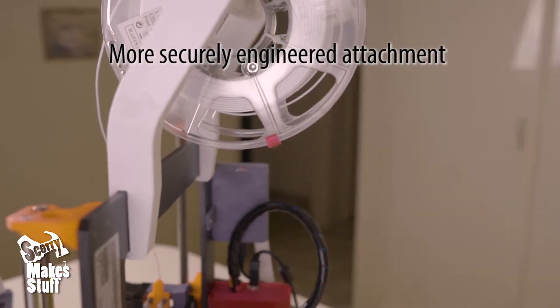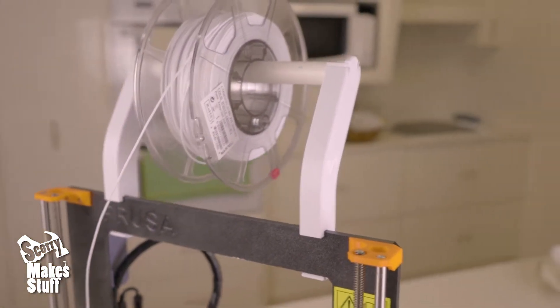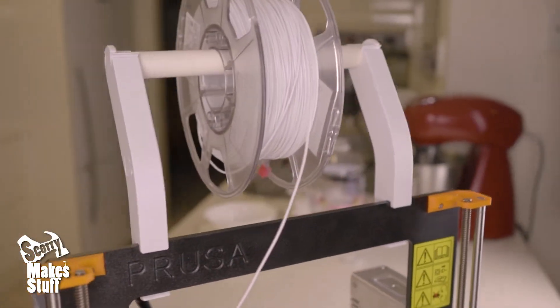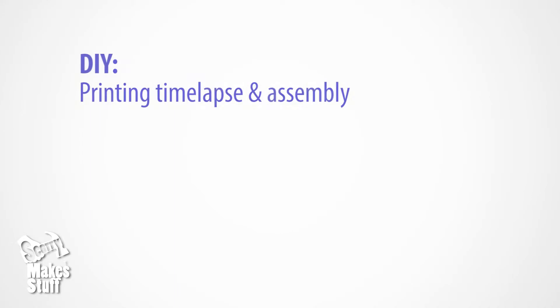In this design I've incorporated a removable spool spindle out of the cheap and common PVC tube in 20mm or 3 quarter inch diameter. You'll find it in all hardware stores or you could just print the tube I added in the downloads.